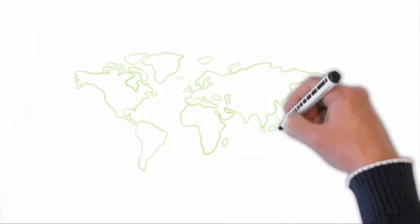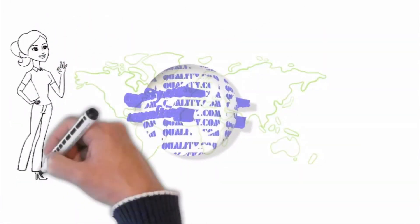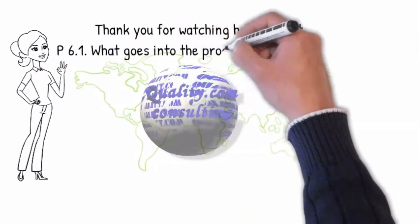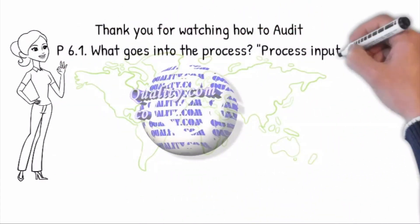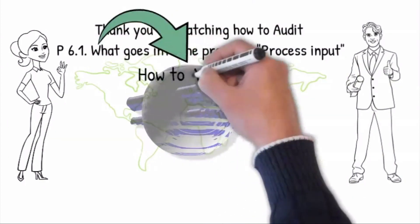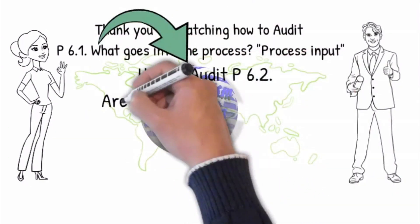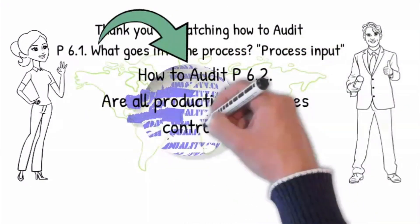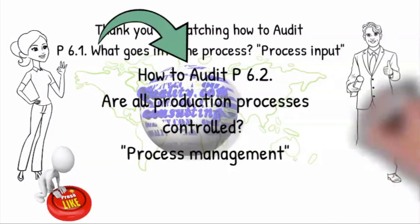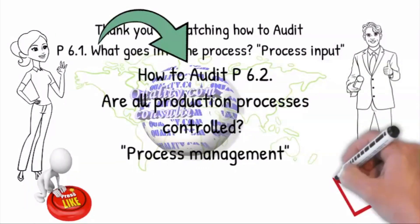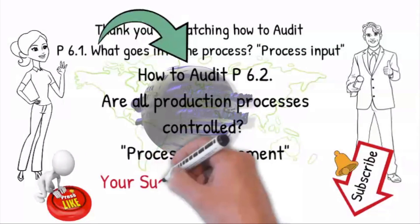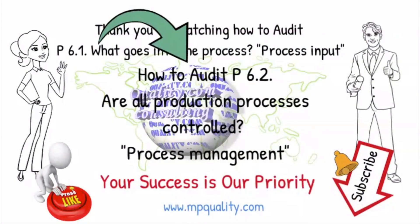Thank you for watching how to audit P6.1 — what goes into the process. In the next video we share how to audit P6.2: Are all production processes controlled? We invite you to share this video with your colleagues and friends. Your success is our priority.